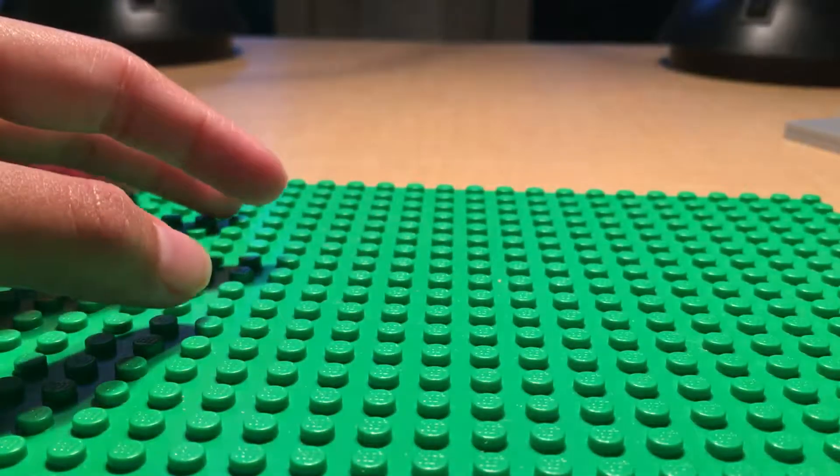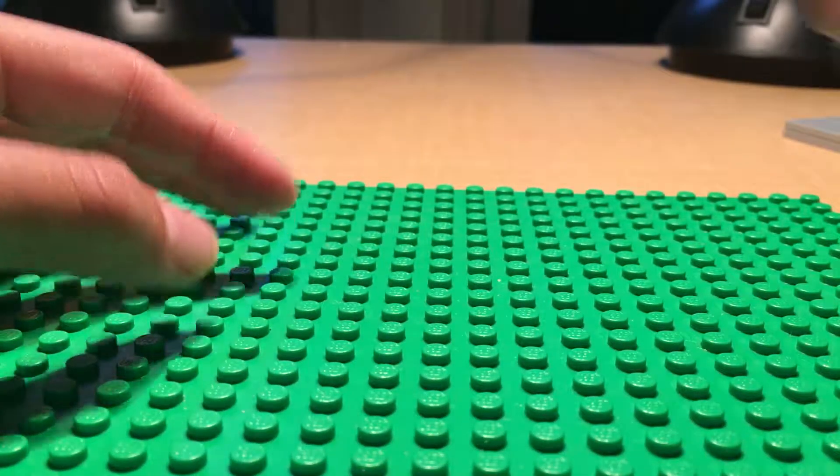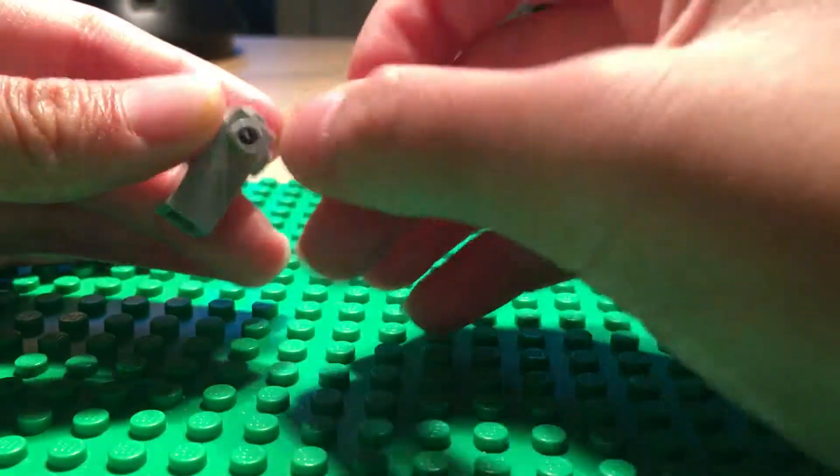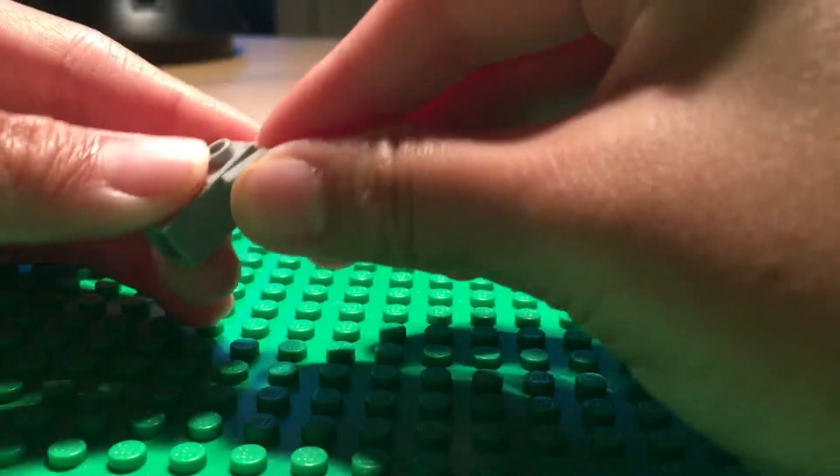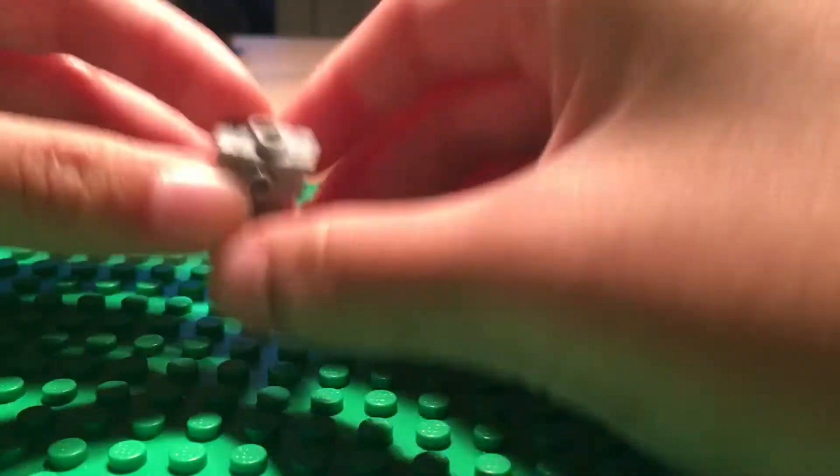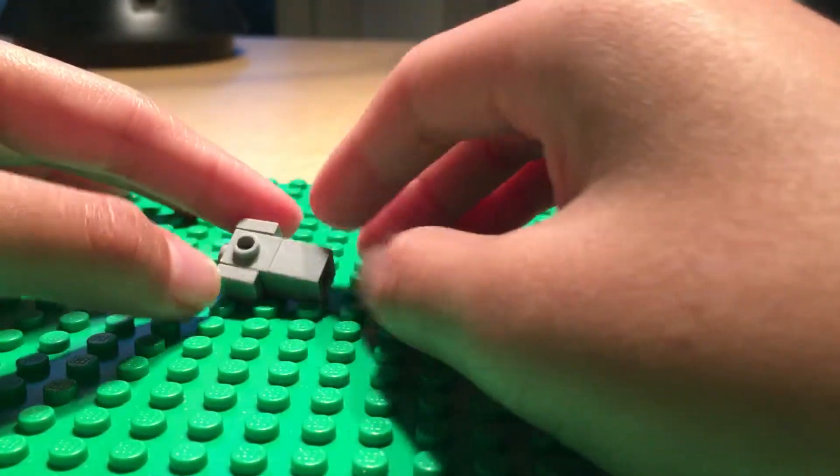Put that aside and you have to make this. It's just a Travis brick with two one by one smooths on either side with a one by one brick.